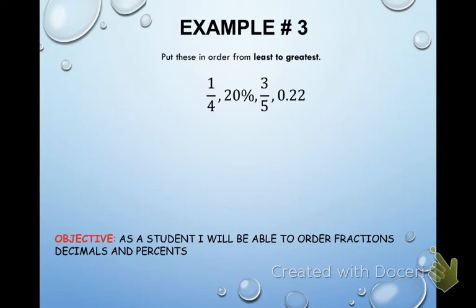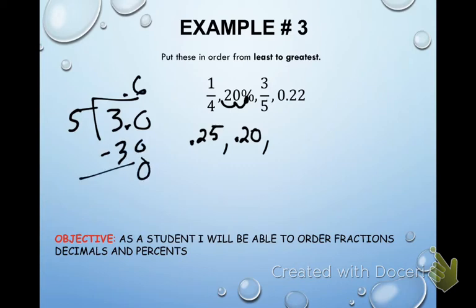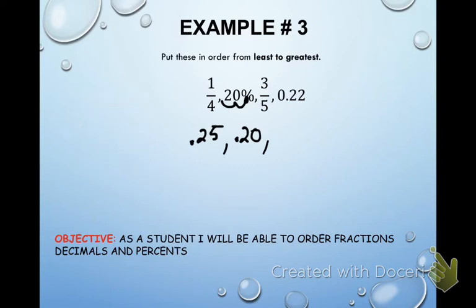Example number three. I know that one-fourth is one quarter, which is the same as 25%. Take off the percent and move the decimal two places to the left: 0.25. For 20%, that gives 0.20. Next, three-fifths: three divided by five — add the decimal and zero, five goes into 30 six times, subtract and you're done. Three-fifths equals 0.6.